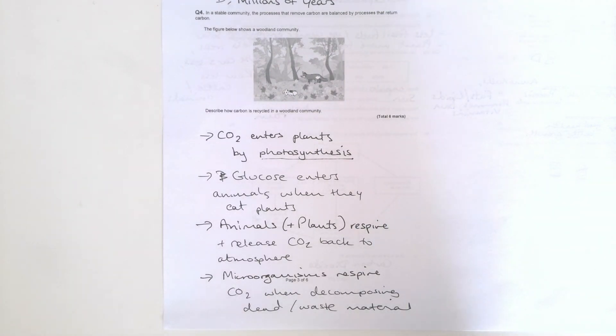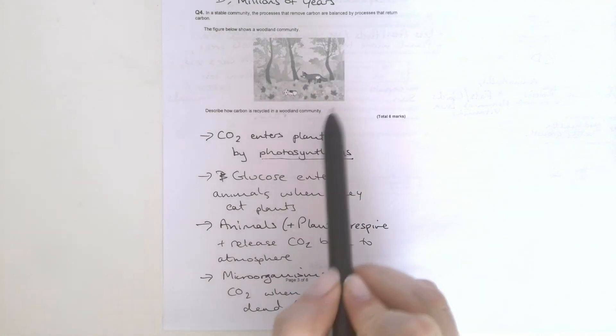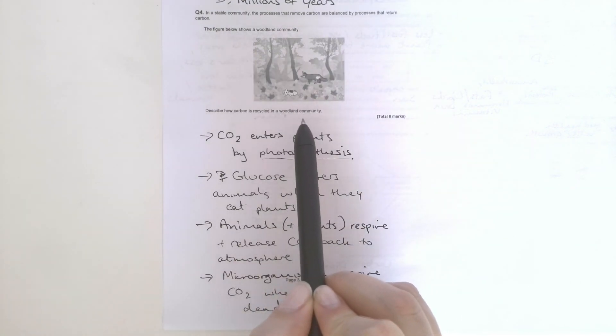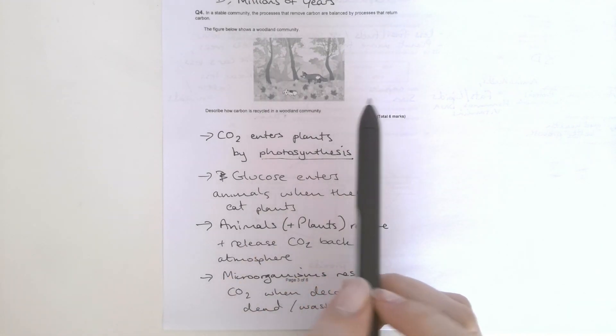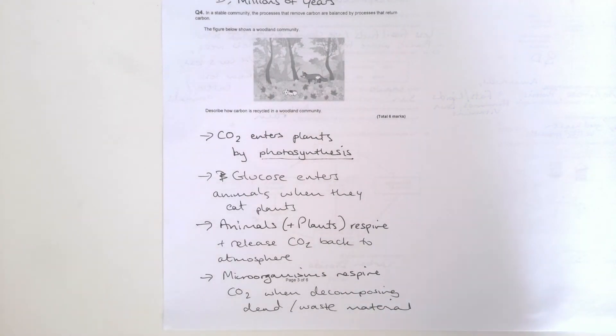Some of you did mention combustion, which is very unlikely to happen in a woodland community. Combustion is sort of burning of fossil fuels. These animals will not be burning any fossil fuels anytime soon. Okay, if you have any further questions on those questions, send me a comment.